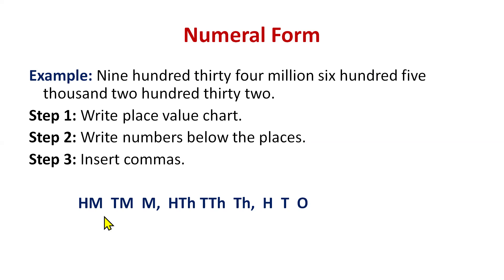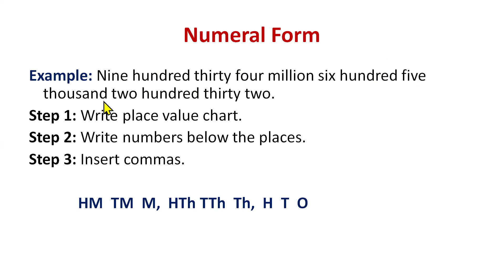For example: 934 million, 605 thousand, 232. We have hundreds at three levels: hundred millions, hundred thousands, and hundreds. We need to figure out where each digit goes. 934 goes in the millions period, 605 in the thousands period, and 232 in the ones period. You must read the full word form to recognize where to place each set of digits.